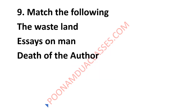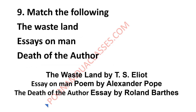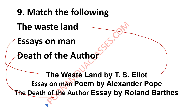A few writers were to be matched with their works: The Waste Land, Essay on Man, and Death of the Author. We know The Waste Land is by T.S. Eliot, Essay on Man is by Alexander Pope, and Death of the Author is the essay by Roland Barthes.